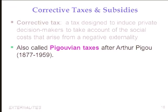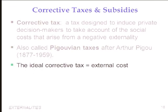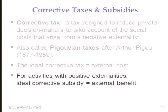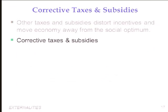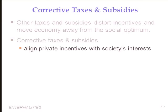Previously, sales taxes detracted from economic efficiency by reducing total surplus because the private equilibrium was the social optimum. Now that's no longer the case. Corrective taxes and subsidies move us from inefficient private outcomes to efficient social outcomes. What we're trying to do through these corrective taxes and subsidies is align private incentives with the social interest — making private decision makers take into account the external costs imposed on innocent bystanders or the external benefits they generate, moving the economy toward a socially efficient allocation of scarce resources.